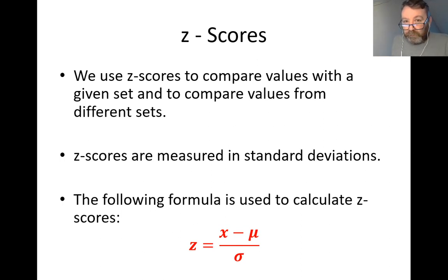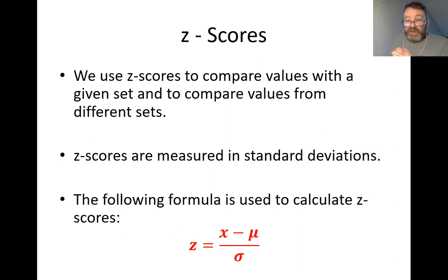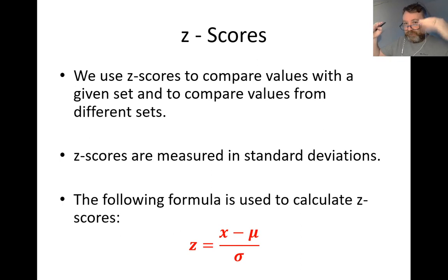Z-scores are standardized to sit on the normal curve. We're only dealing with the normal curve here because the statistics we're dealing with are naturally or normally distributed. Z-scores tell us exactly where on the normal curve a value sits, and from that we can work out the percentage of people above or below that value by simple mathematics.